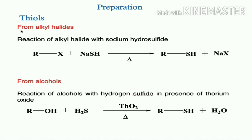Thiols can be prepared from alkyl halides. A simple reaction of an alkyl halide with sodium hydrosulfide under thermal conditions gives the corresponding thiol derivative. Thiols can also be prepared from alcohols by reaction with hydrogen sulfide in the presence of thorium oxide as a catalyst.